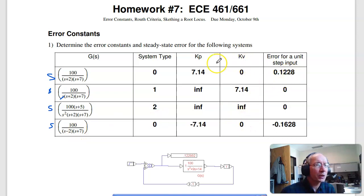The error per step input is 1 over kp plus 1, so it's 0.12, negative 0.16 - you can't have negative steady state error. And type 1, type 2, type 3 and so on have no error per step input.